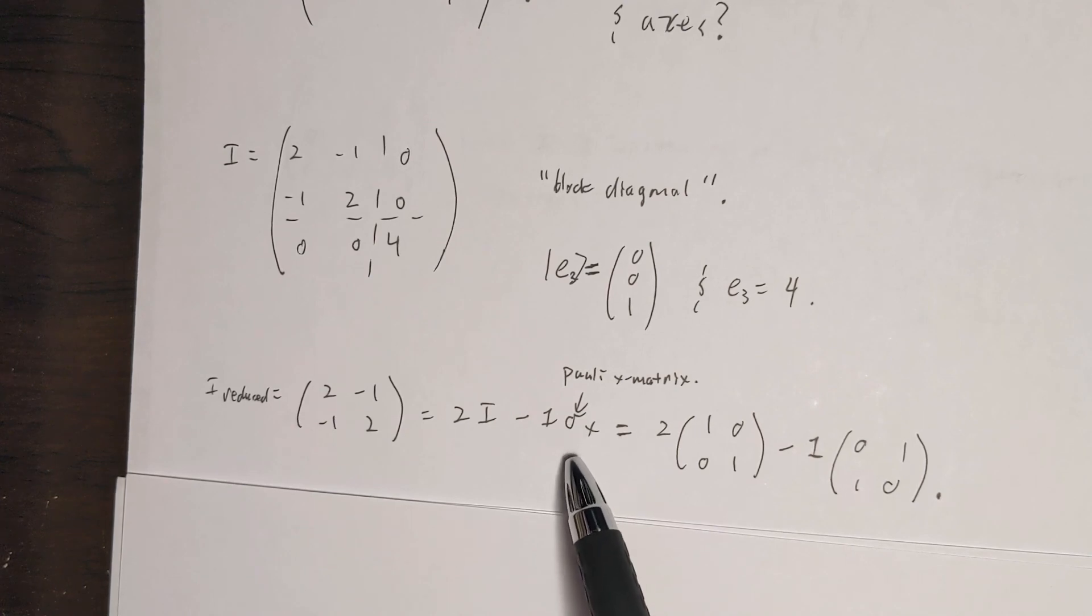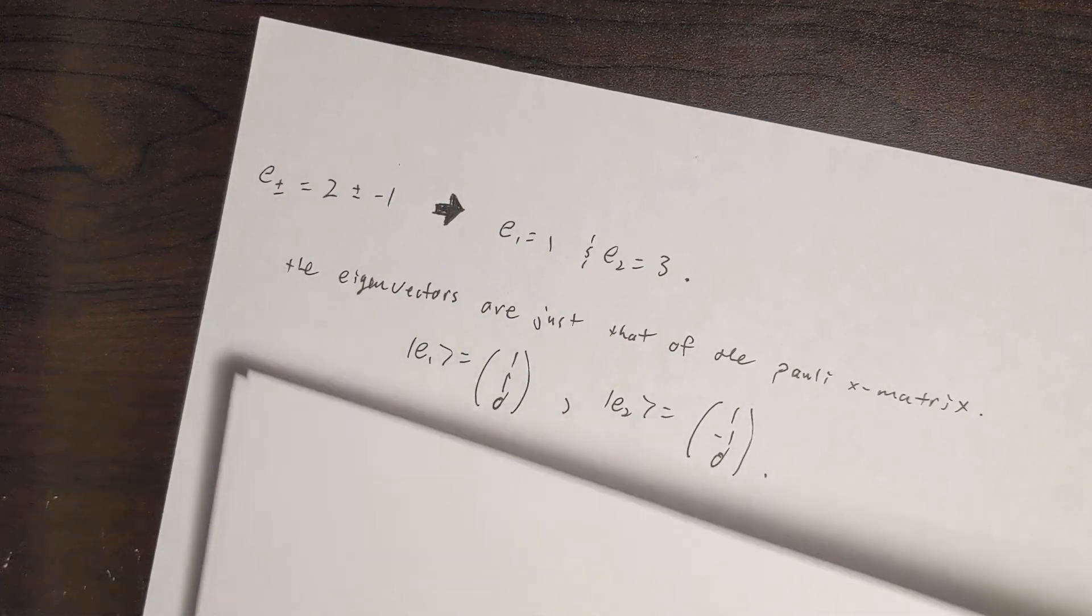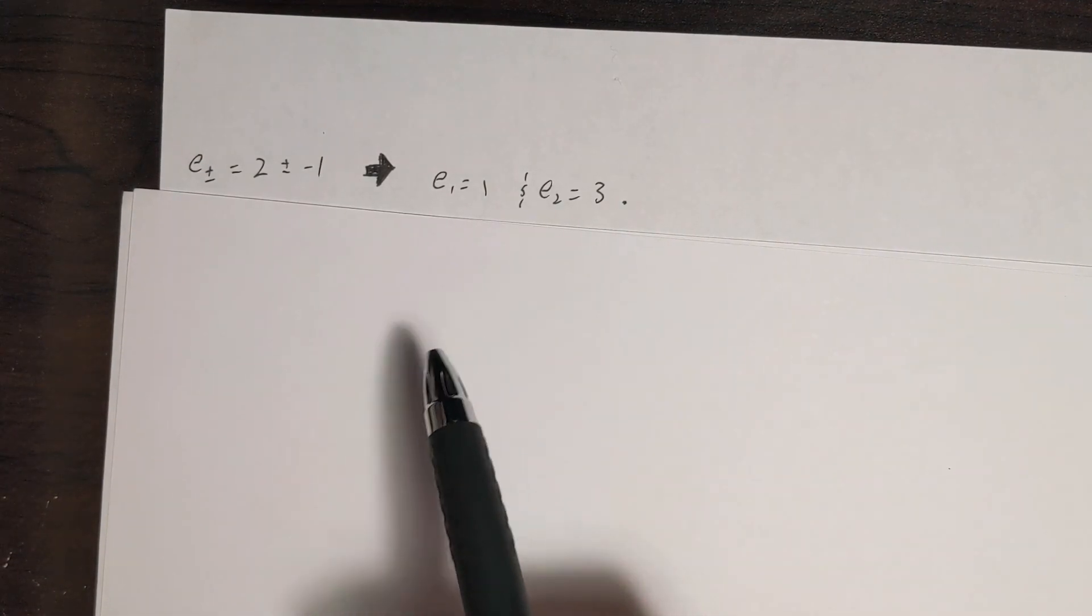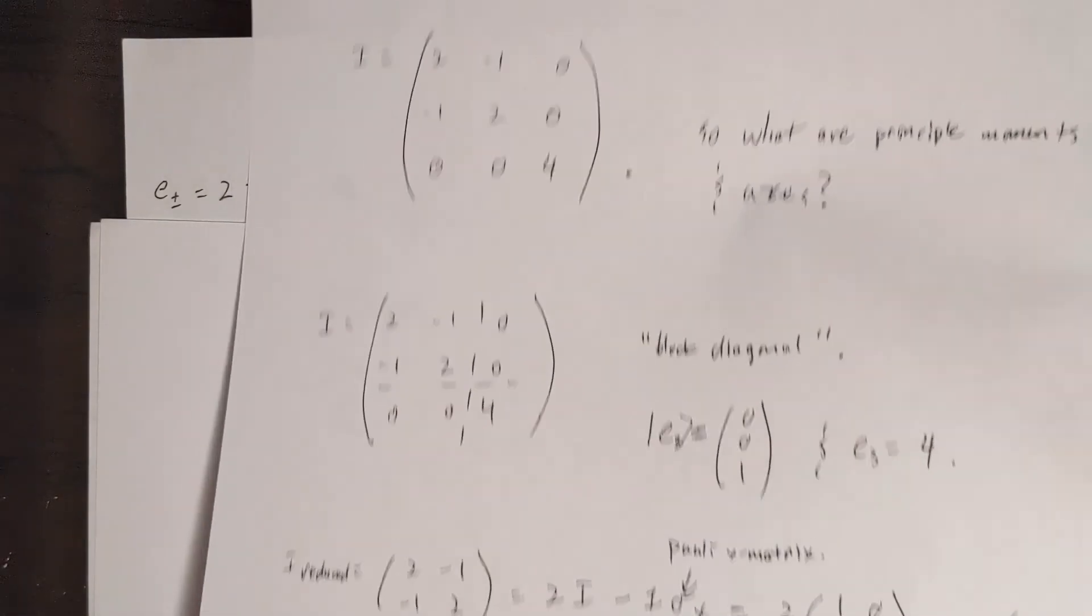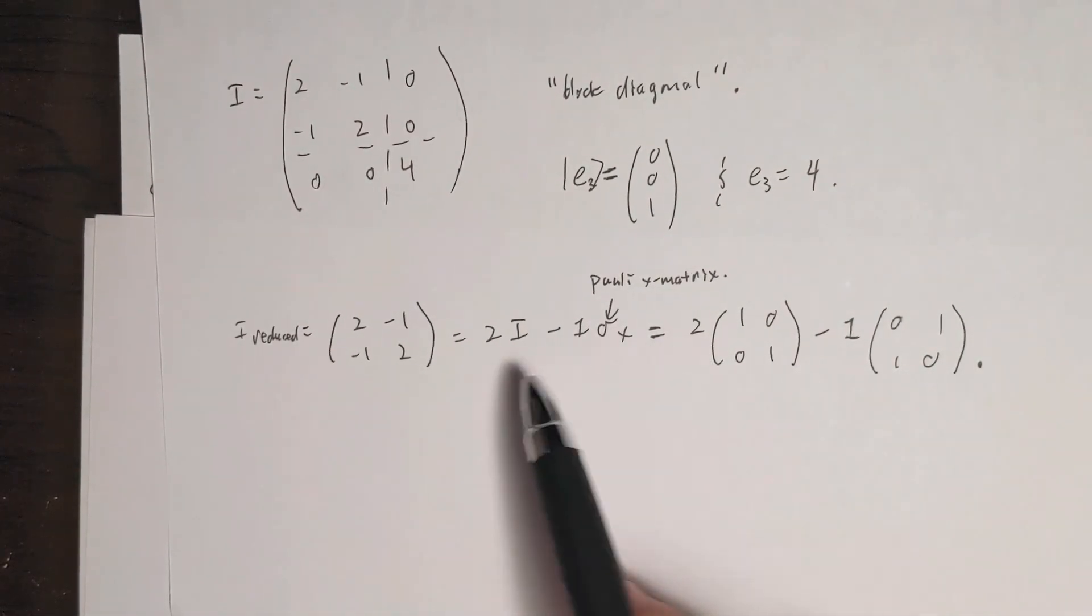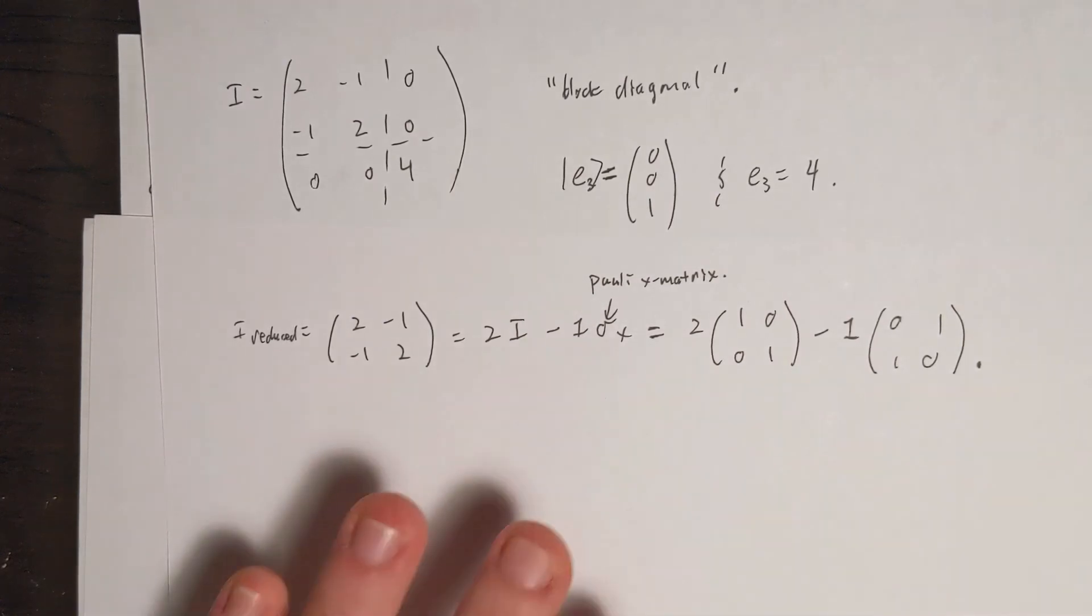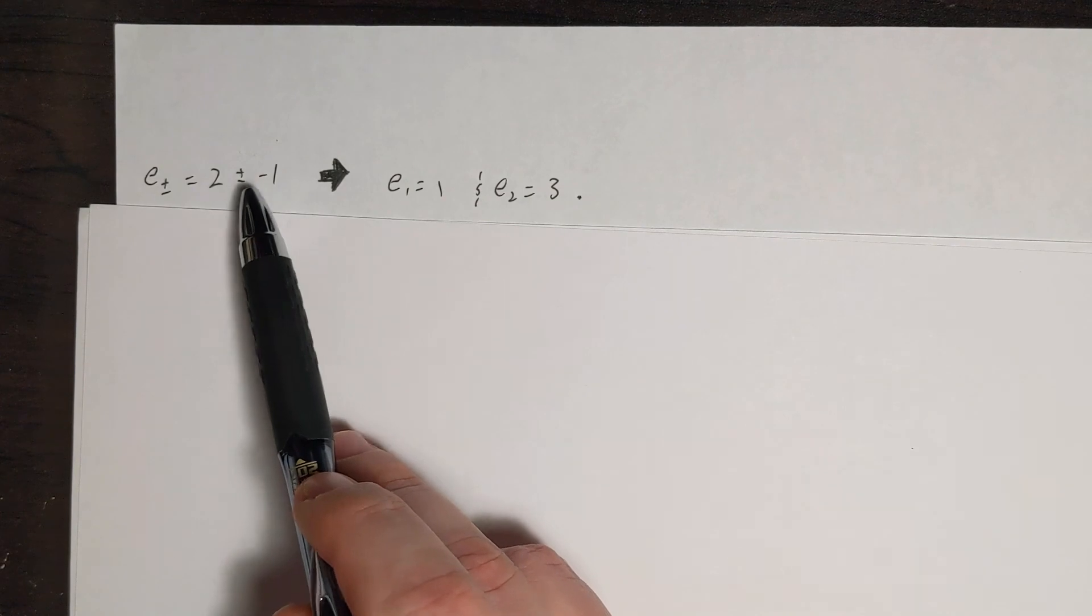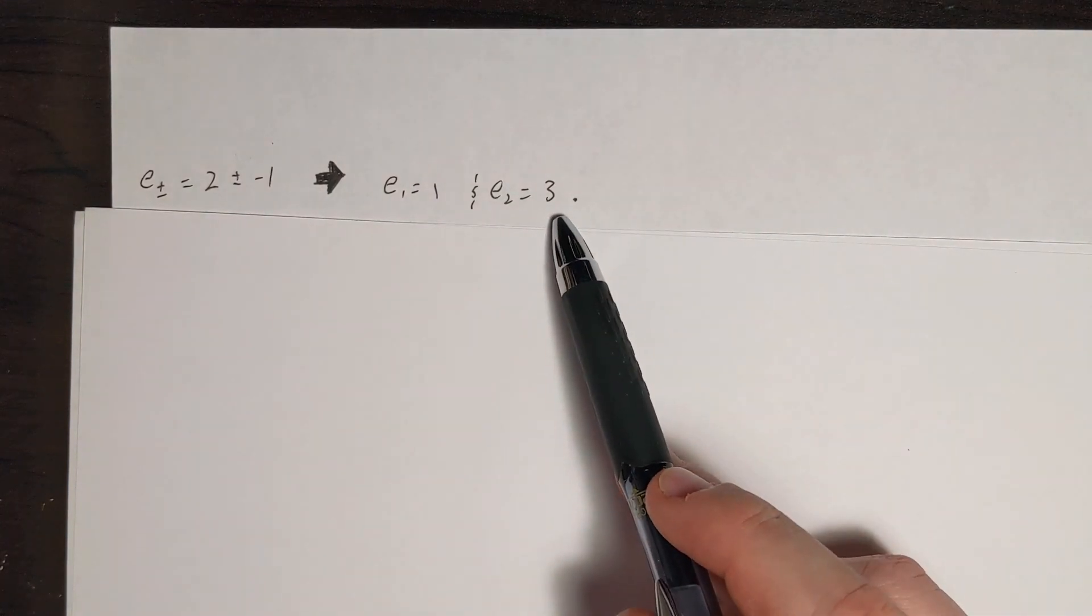So now comes the really neat trick. All I have to do is find the eigenvalues and eigenvectors of this 2x2 matrix, which can be written as twice the identity, and then I can subtract the Pauli-x matrix to get this. Now, you're going to be wondering, why on earth am I doing that? Well, this allows me a very easy way to write off the remaining eigenvalues and eigenvectors.